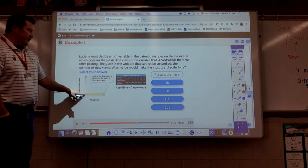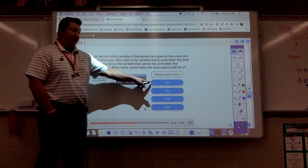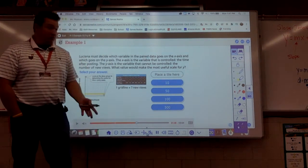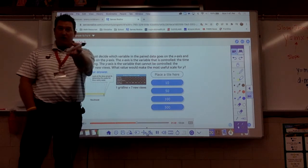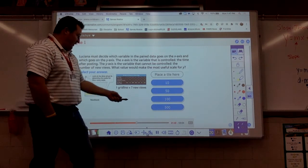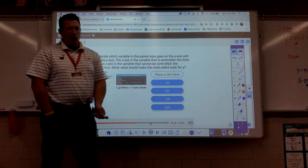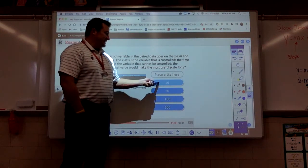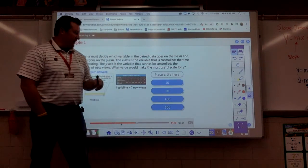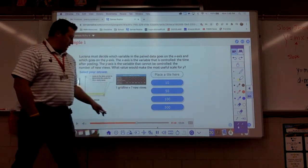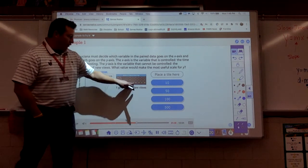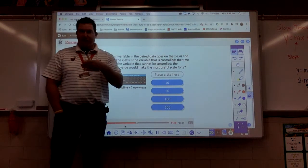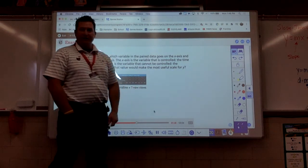You're going to count by 1s. The Y axis is the variable that cannot be controlled, the number of new views. Each grid line equals some number of new views. What value would make the most useful scale for Y? So, again, folks, we've got to go from 25 all the way up to, I think, 500. So, like, should each square be worth 10, 50, 100, or 500? What do you guys want me to choose? Somebody shout out a number. 500. 500. Oh, but we get to hear the fun noise. 10. 10?